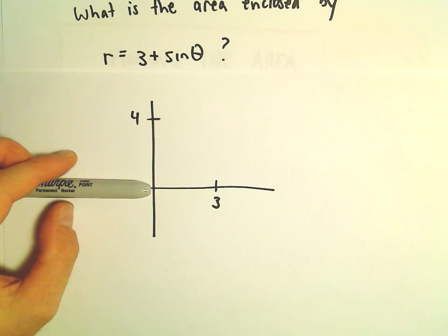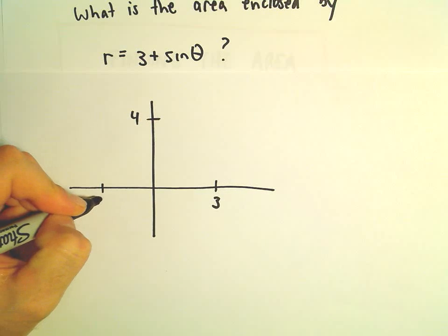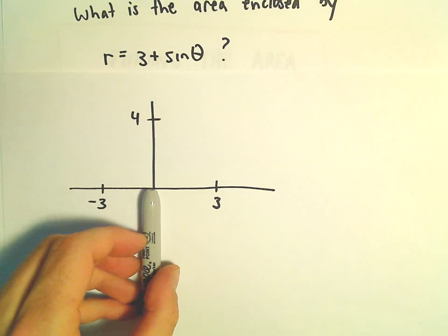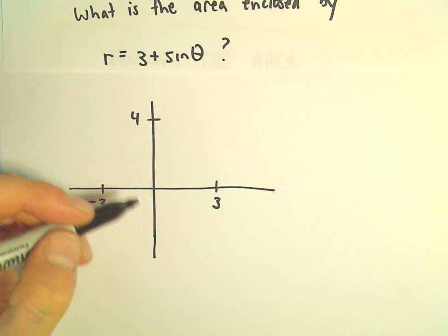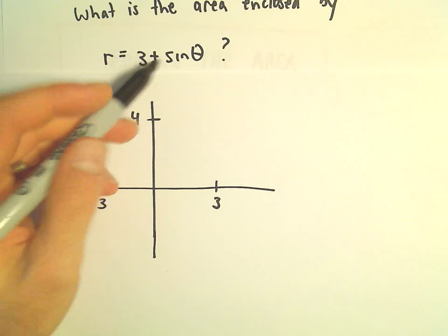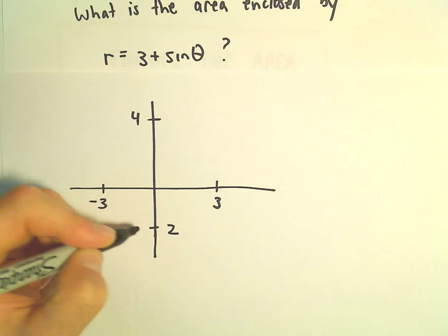At pi, sine of pi is 0, so we would be sitting at negative 3. And then at the angle 3 pi over 2, sine is going to be negative 1, so we'll get 3 minus 1, and that will put us at negative 2.